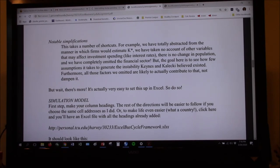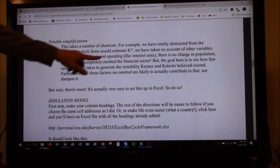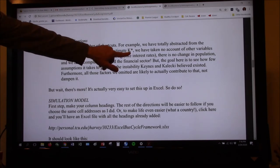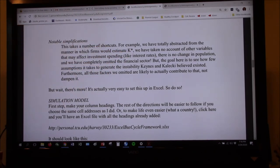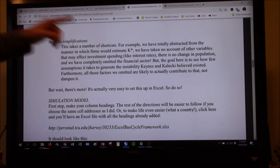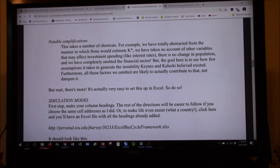Notable simplifications. This takes, of course, it's a model. So as a model, it's going to be a simplification. This takes a number of shortcuts. For example, we have totally abstracted away from the manner in which firms would estimate their target stock of capital. We just said, it's so-and-so. We never change it. It's going to be the same the whole way through. We have taken no account of other variables that may affect investment spending, like interest rates. And there is no change in population.